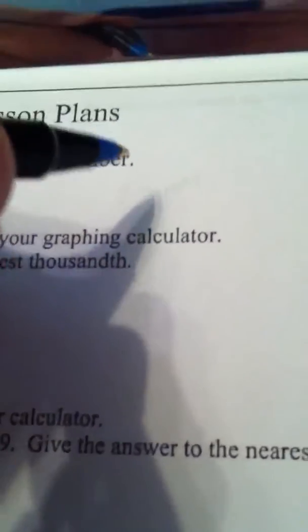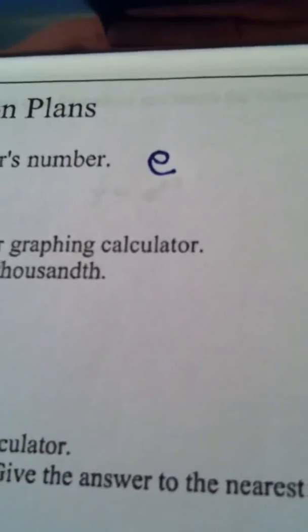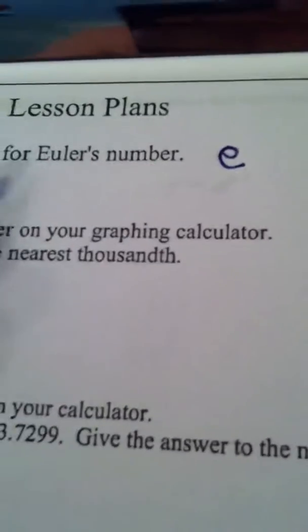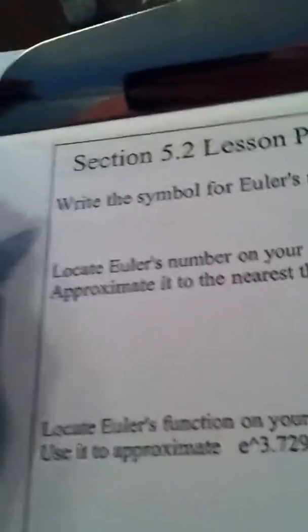And as we discussed in class, Euler's number, the symbol is written as an e. I guess if I named a number after myself, I would start it with my last name too, so I don't blame him.